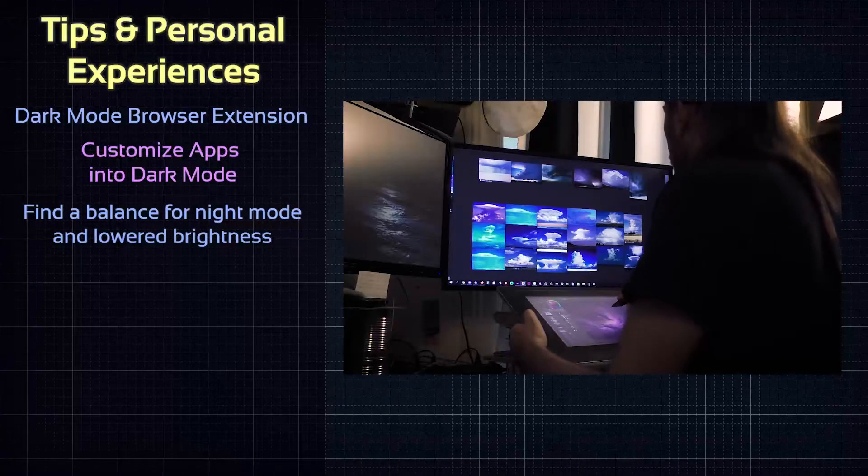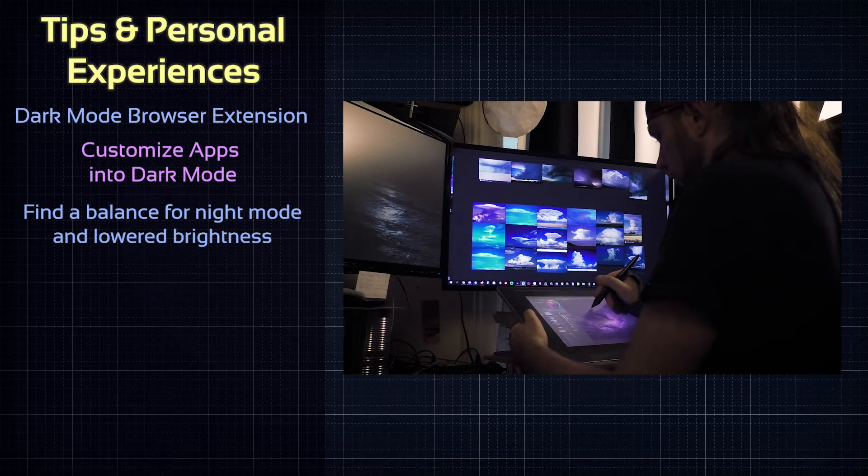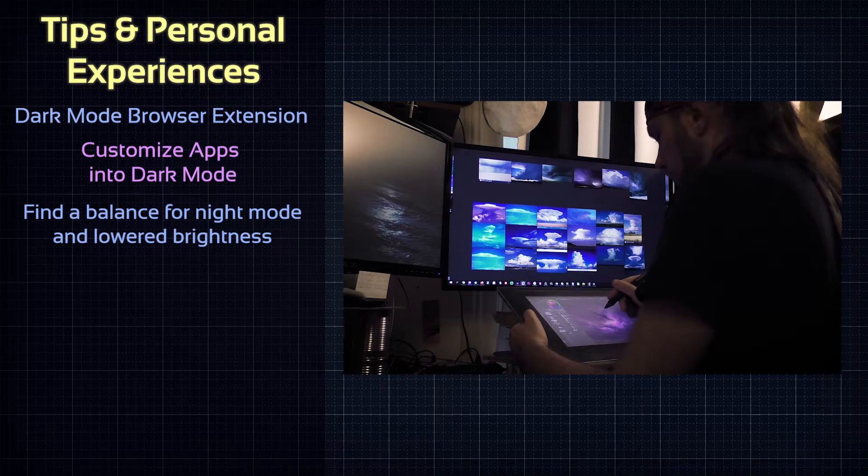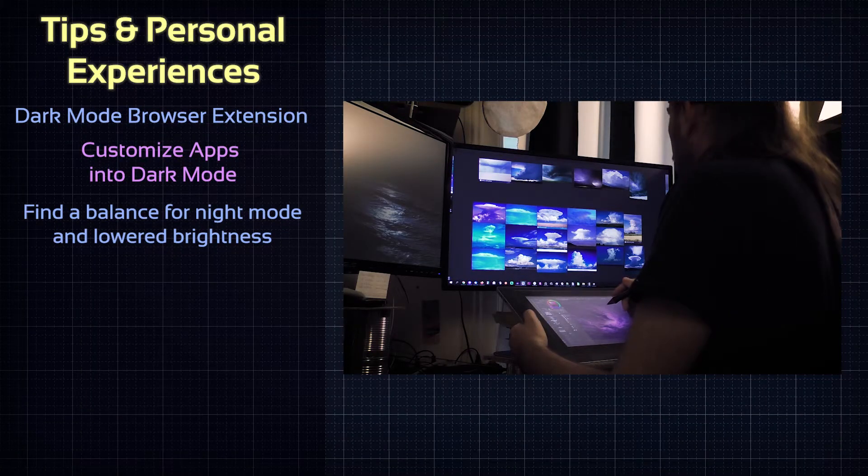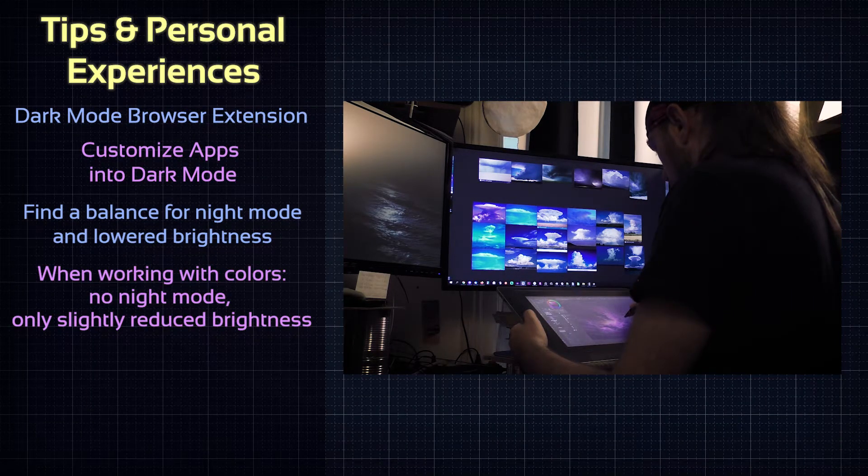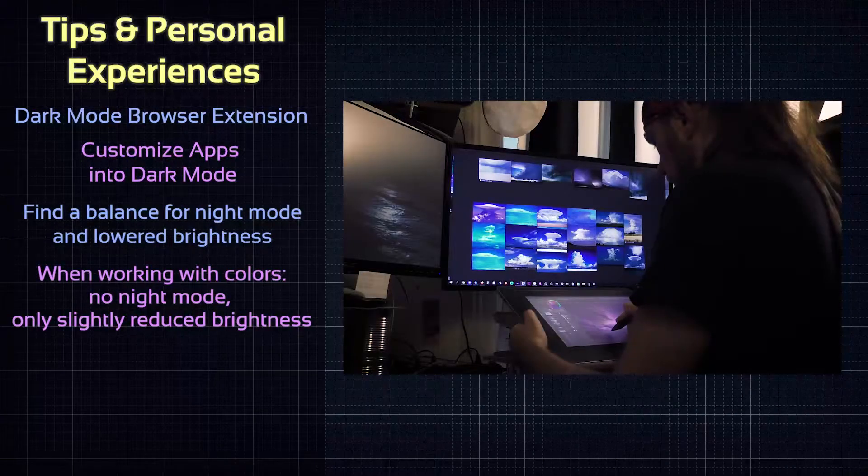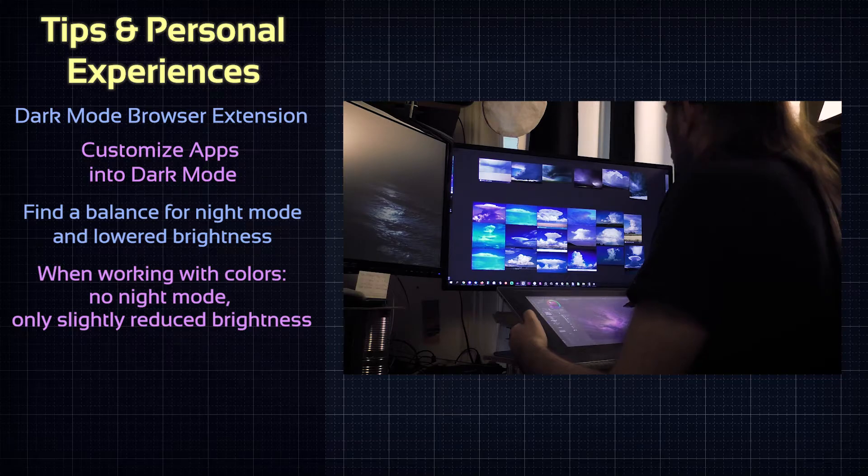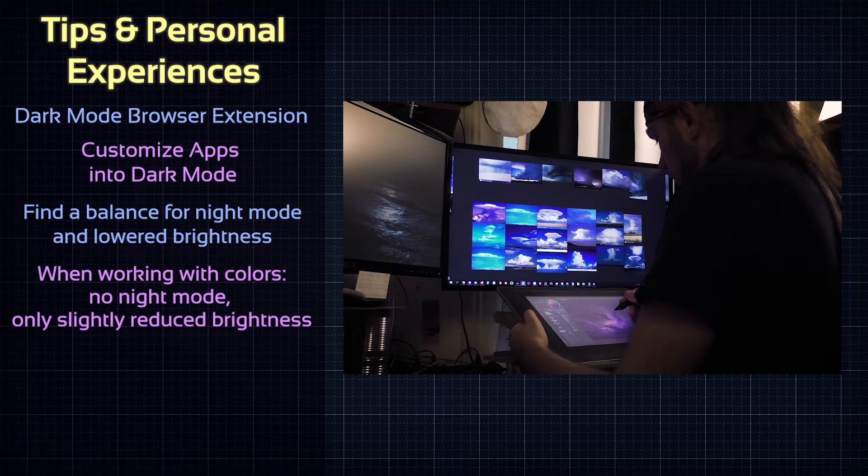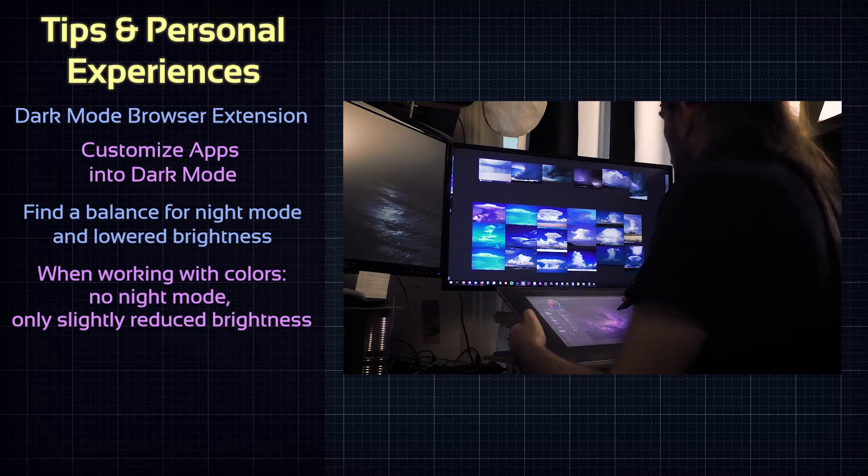And the biggest problem is my drawing screen. Especially when I work on a colored project, I really need the full contrast in original colors. Reducing the brightness and or shifting the colors therefore is a bad idea. You can quickly turn the night mode off and on, but that's a bit of a hassle, especially since I often need to look at both my drawing screen and my other screens.